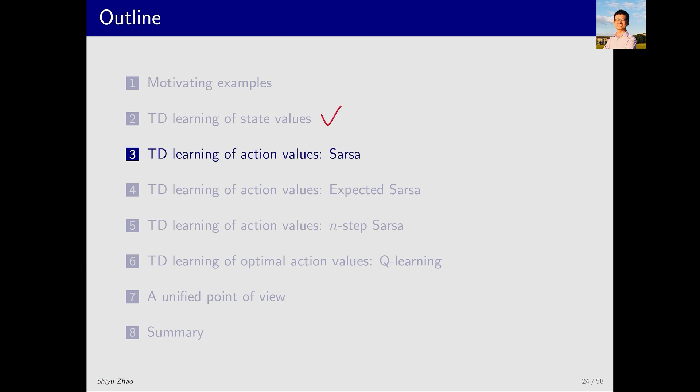We have just finished the second section. In this part, we introduced a very classic TD algorithm that can estimate the state value of a given policy. We analyzed many of its properties, such as why it is designed this way, what mathematical problem it solves, and its convergence properties. We also compared the TD algorithm with the Monte Carlo method we previously studied. Although the second part is just one of the eight sections, the insights it provides into the properties and ideas of the TD method are extremely important. I hope everyone has understood well.